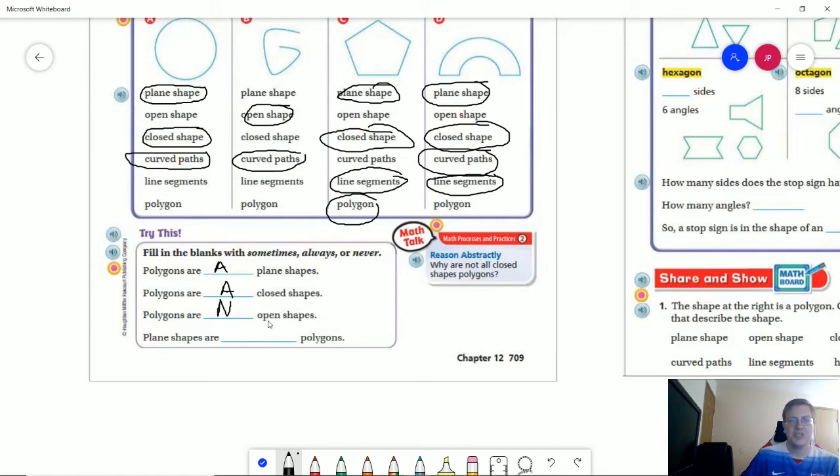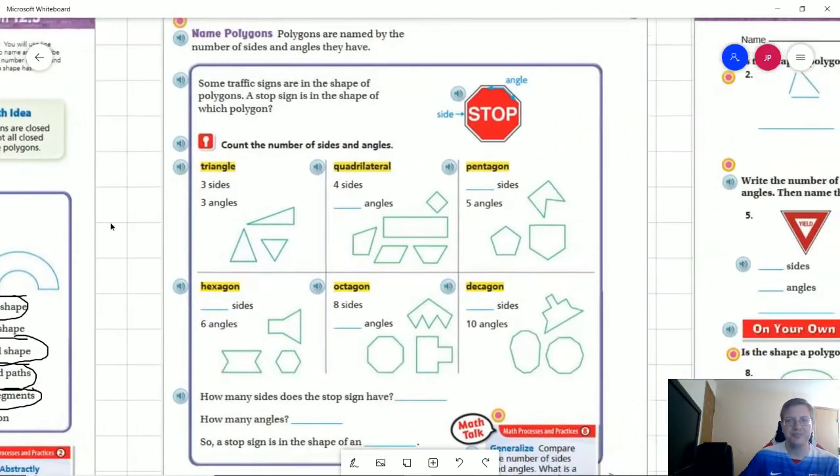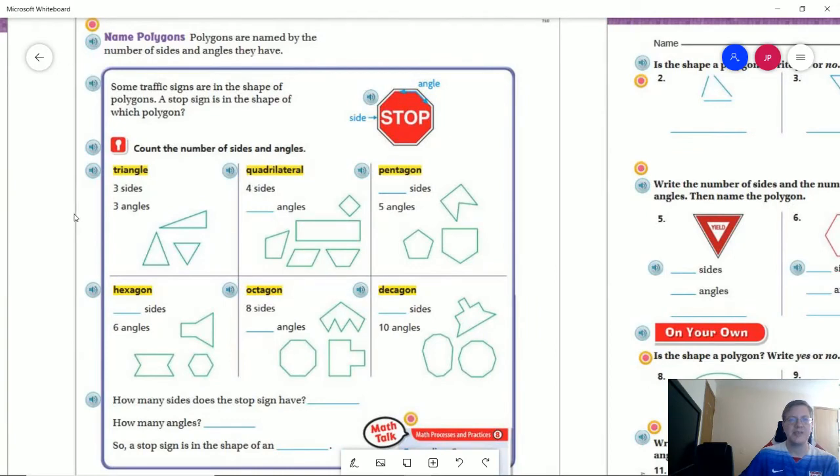And plane shapes are sometimes polygons. So again this would be a plane shape, this would be a plane shape, but because they're not made up of entirely just line segments that takes it away from being a polygon. So let's take a look at our next page.